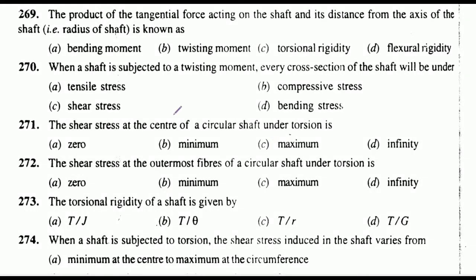Question 269: The product of the tangential force acting on the shaft and the distance from the axis of the shaft (i.e., the radius of the shaft) is known as: bending moment, twisting moment, torsional rigidity, or flexural rigidity. The correct answer is option B: twisting moment.